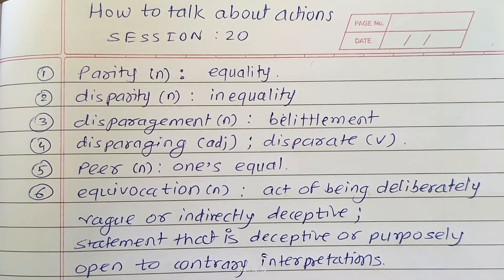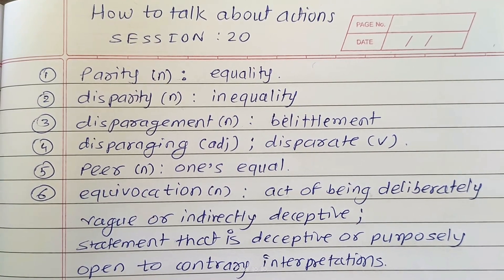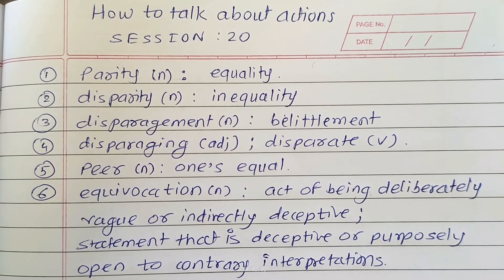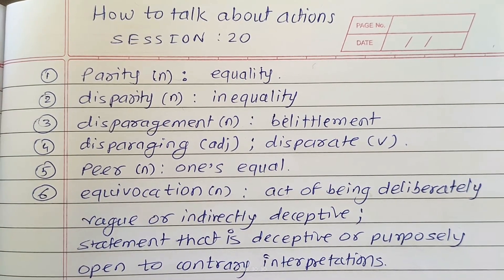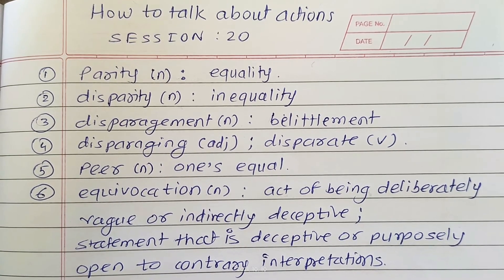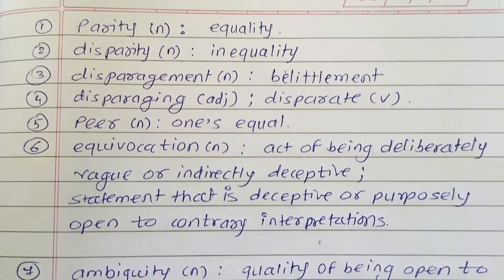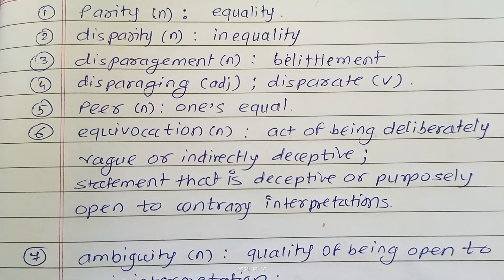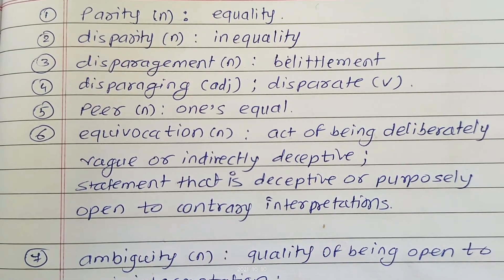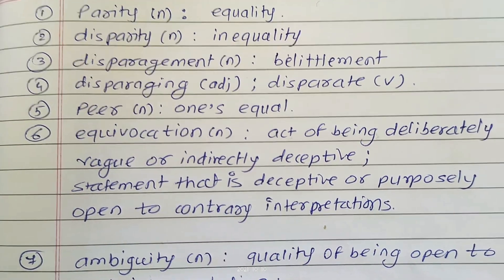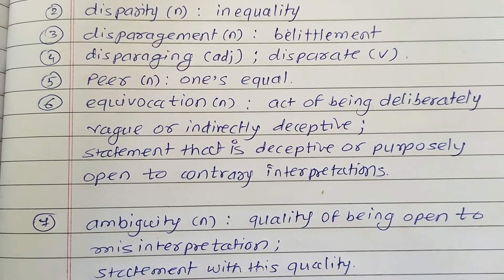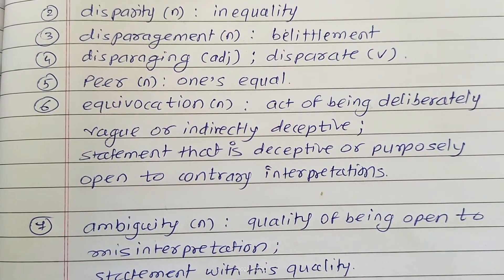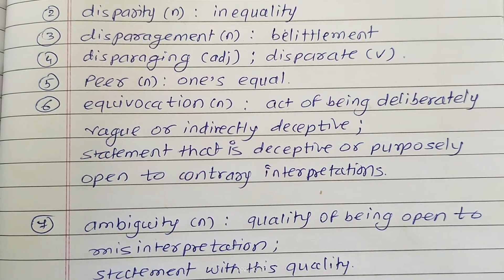My next word is disparagement, meaning belittlement. The adjective form becomes disparate, and the verb form of disparity also becomes disparate. My next word is peer, meaning one's equal.